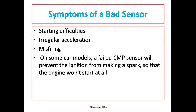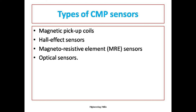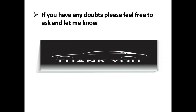There are different types of CMP sensors. The most commonly used are two types: one is magnetic and the second is Hall effect type. Both transmit the signal in the form of voltage. Other types include magnetic pick-up, Hall effect, magneto-resistive, and optical sensors. If you have any doubts, please comment below. Thank you for watching this video, friends.